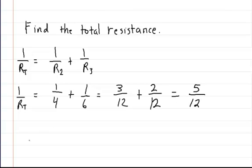And then we're going to add those together, so I'm going to get 5 over 12. So the resistance in parallel, sorry, this is supposed to be resistance in parallel, not the total resistance. So the resistance in parallel is equal to 12 over 5 ohms, or this is equal to 2.4 ohms.